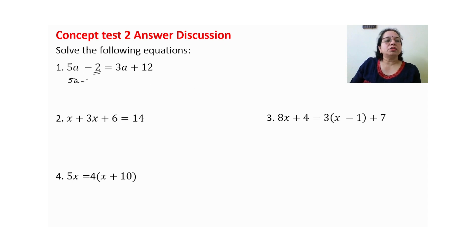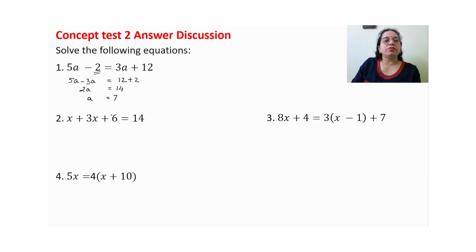5a minus 3a gives us 2a on the left, and minus 2 moves to the right to become plus 2. So 2a is equal to 14, which gives a is equal to 7.